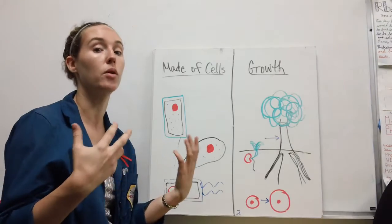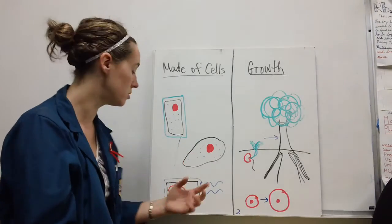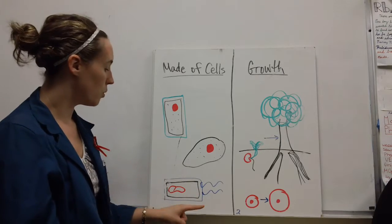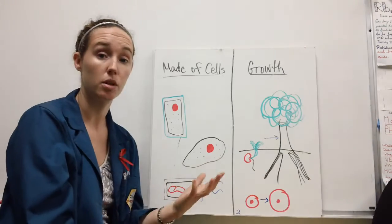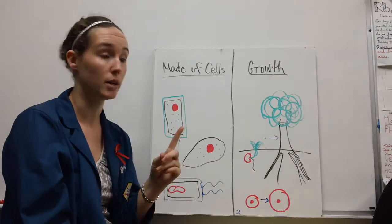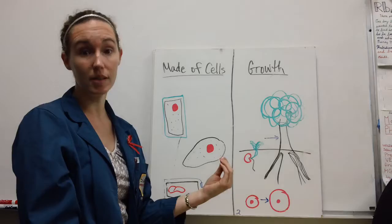Other organisms are made of just one cell - these are our unicellular prokaryotes. Maybe they have a rigid cell wall but they don't have a nucleus. These are going to be our prokaryotic organisms made of just one cell.